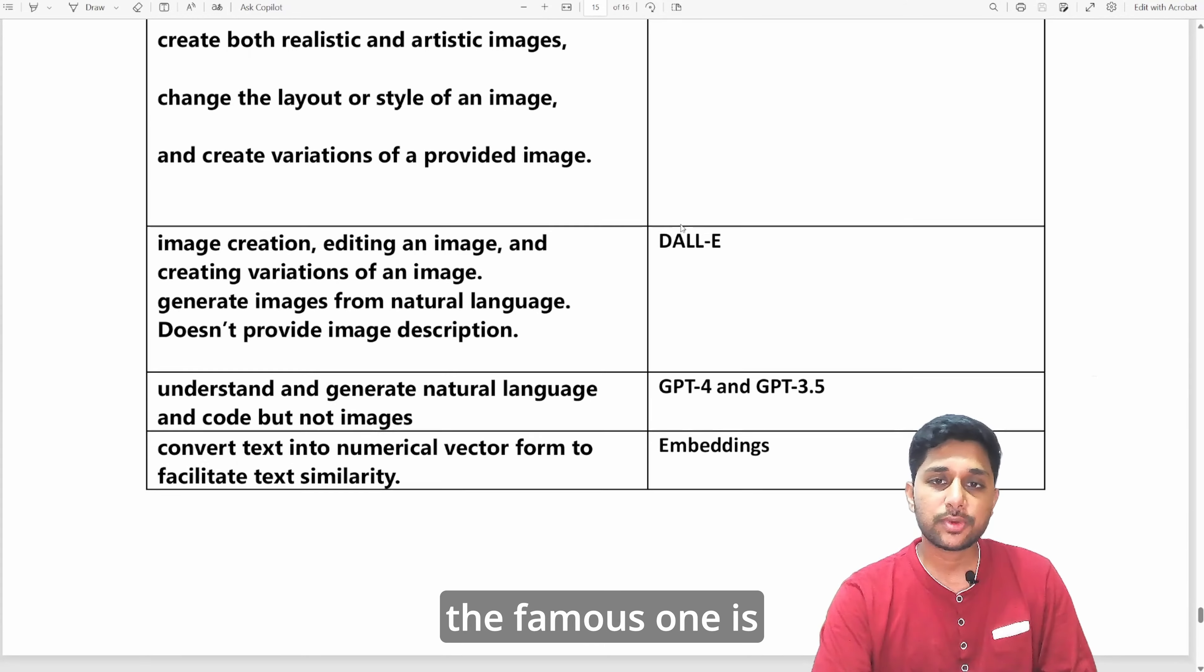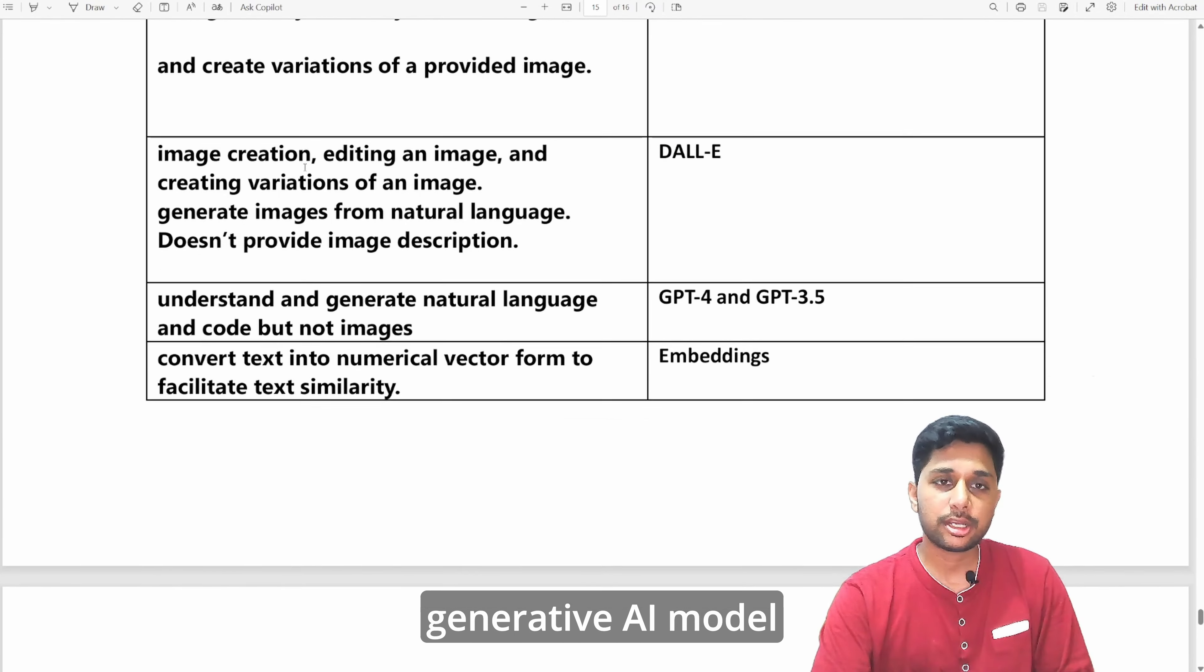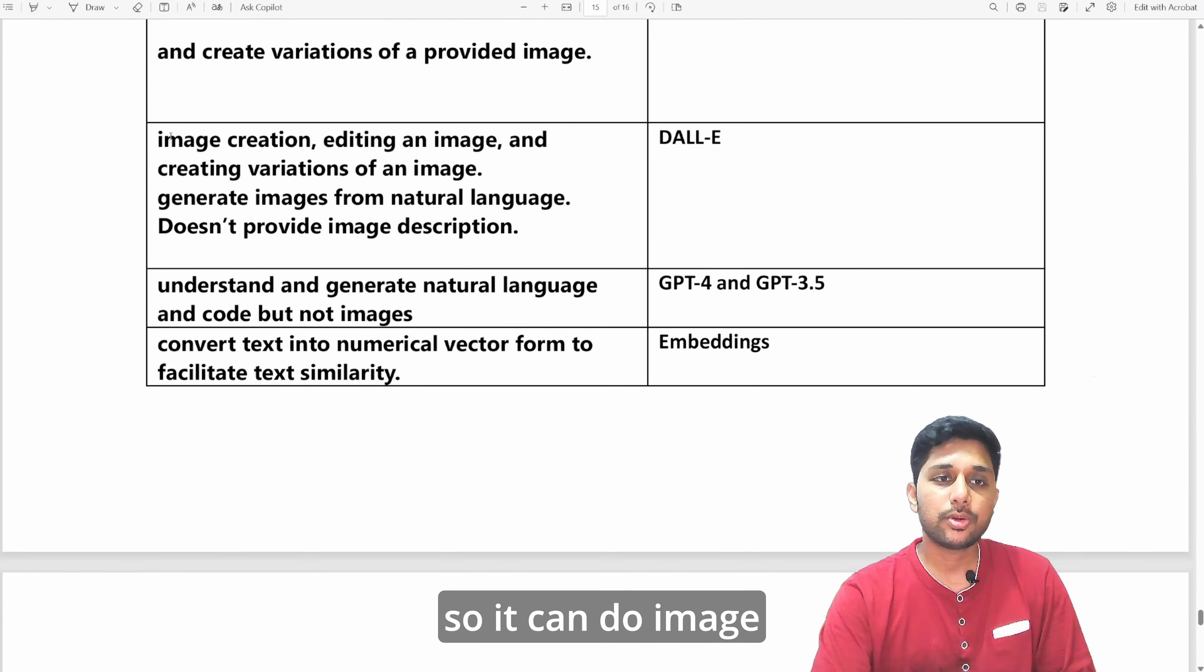One of the famous one is the OpenAI DALL-E, a very famous generative AI model. It can do image creation, you can edit the image, you can create different variations of the image, you can generate images from then based on your natural language prompt.